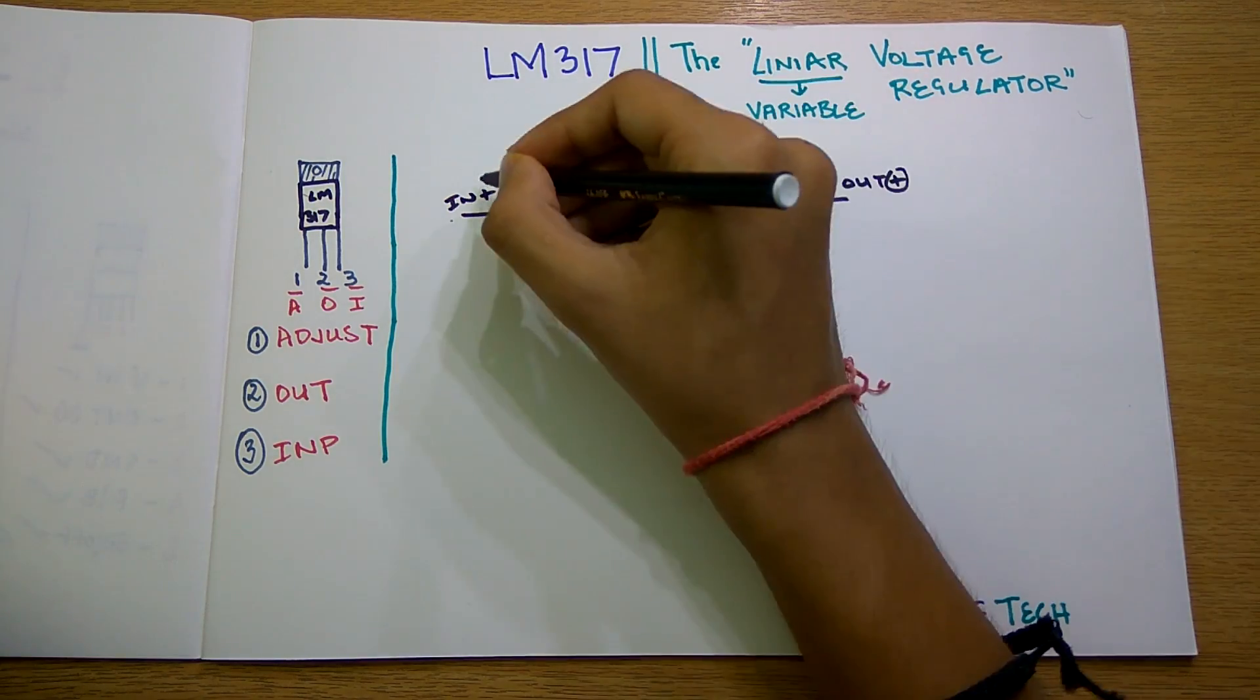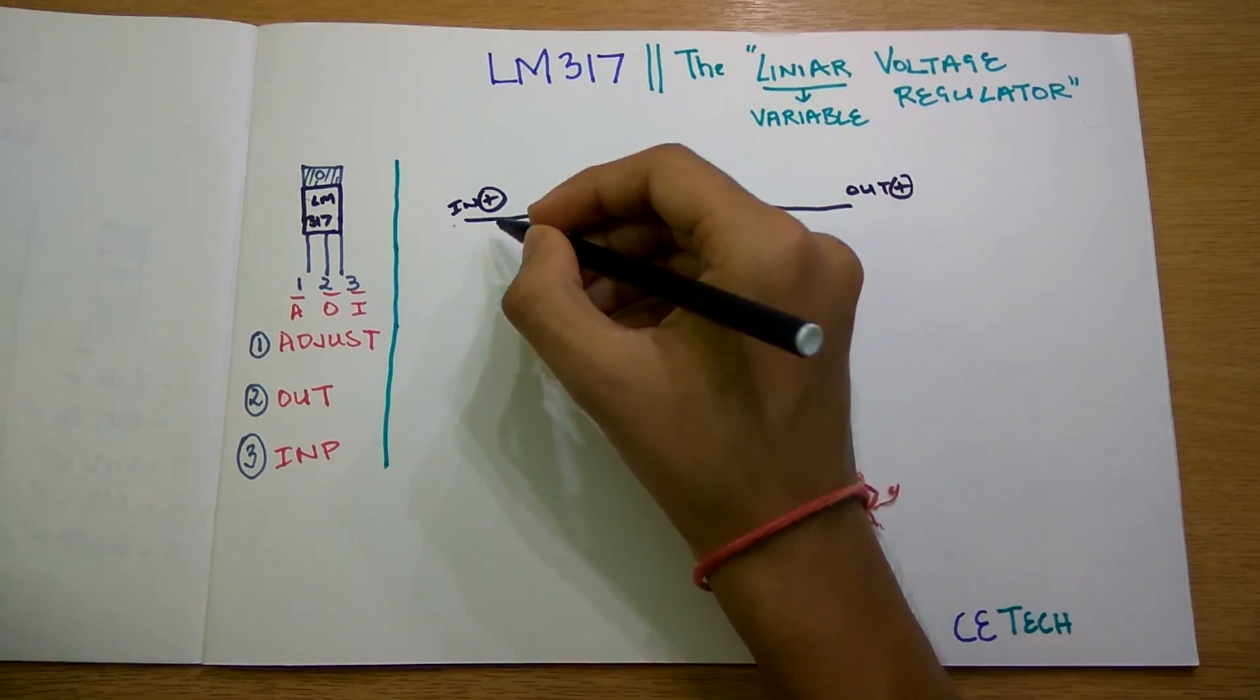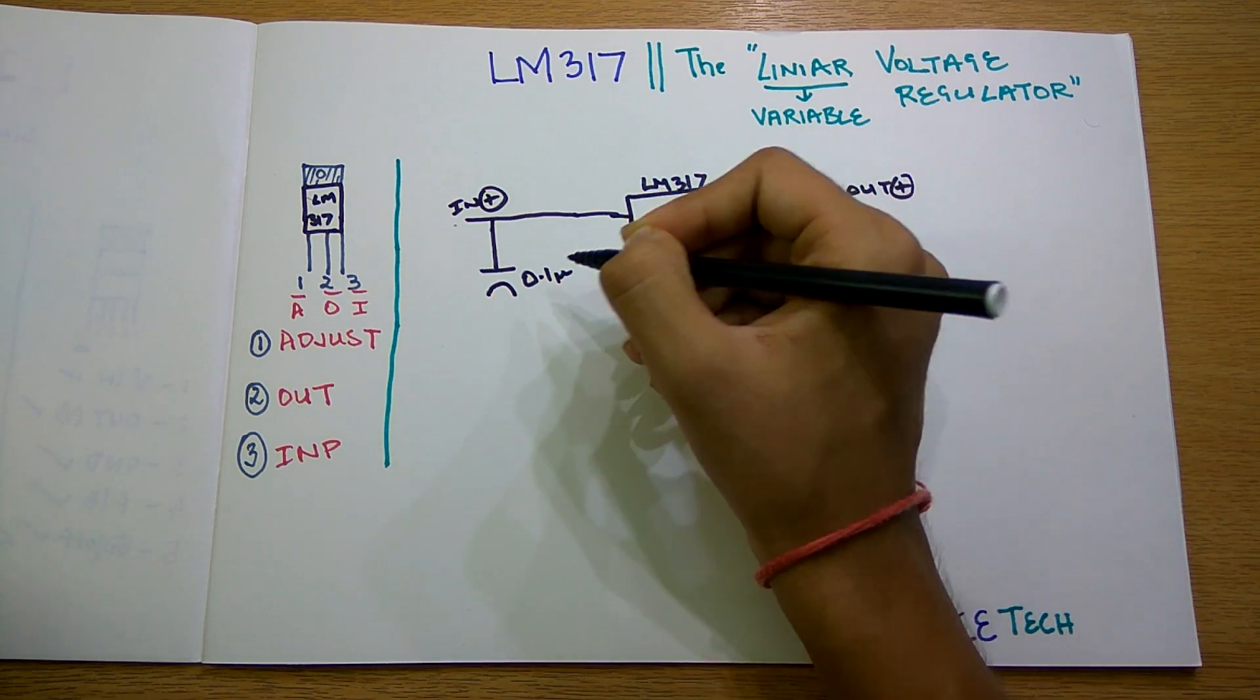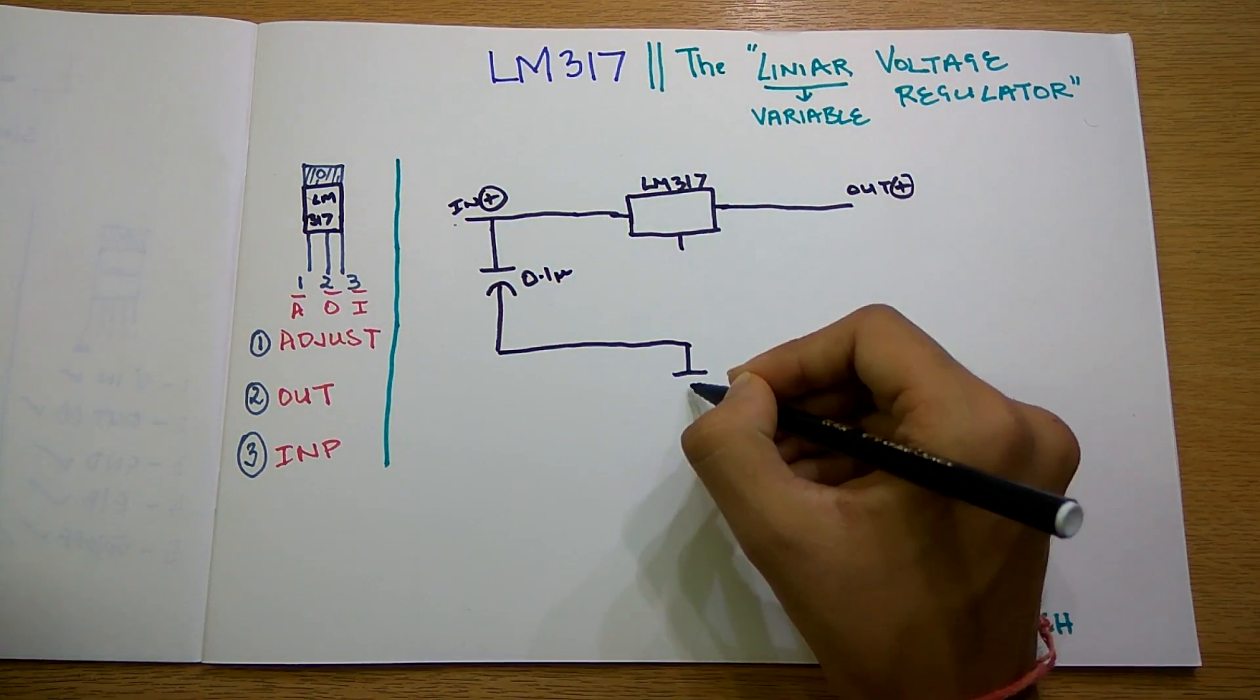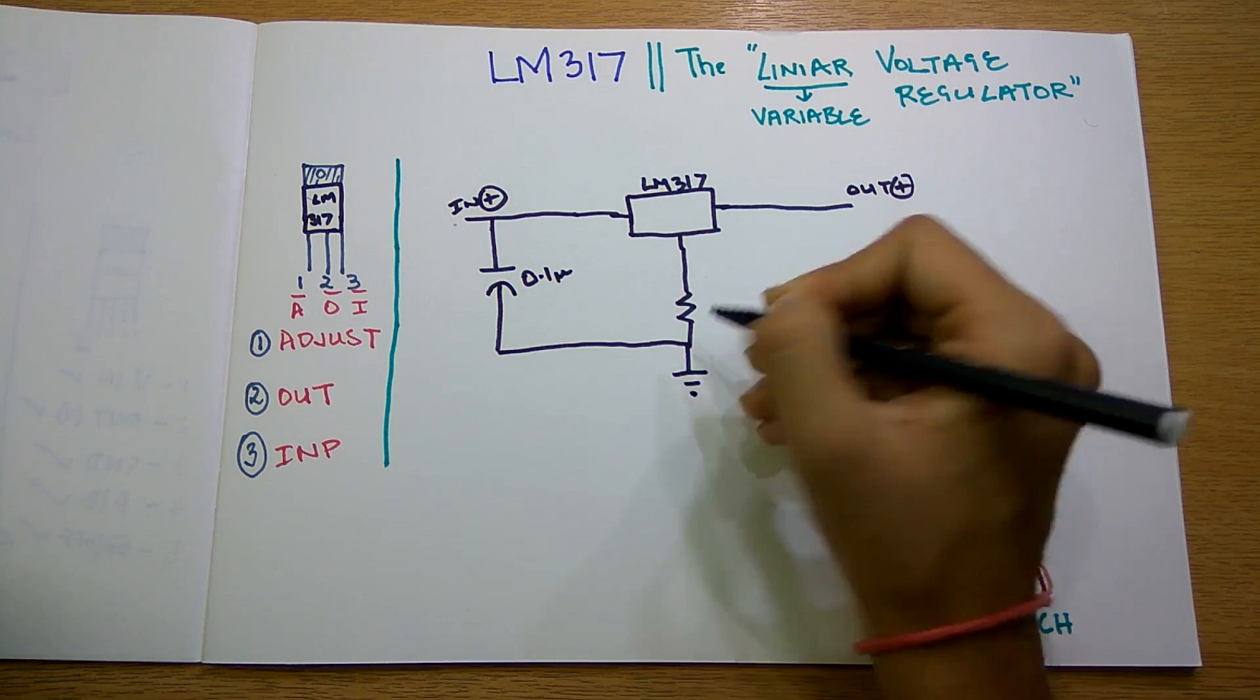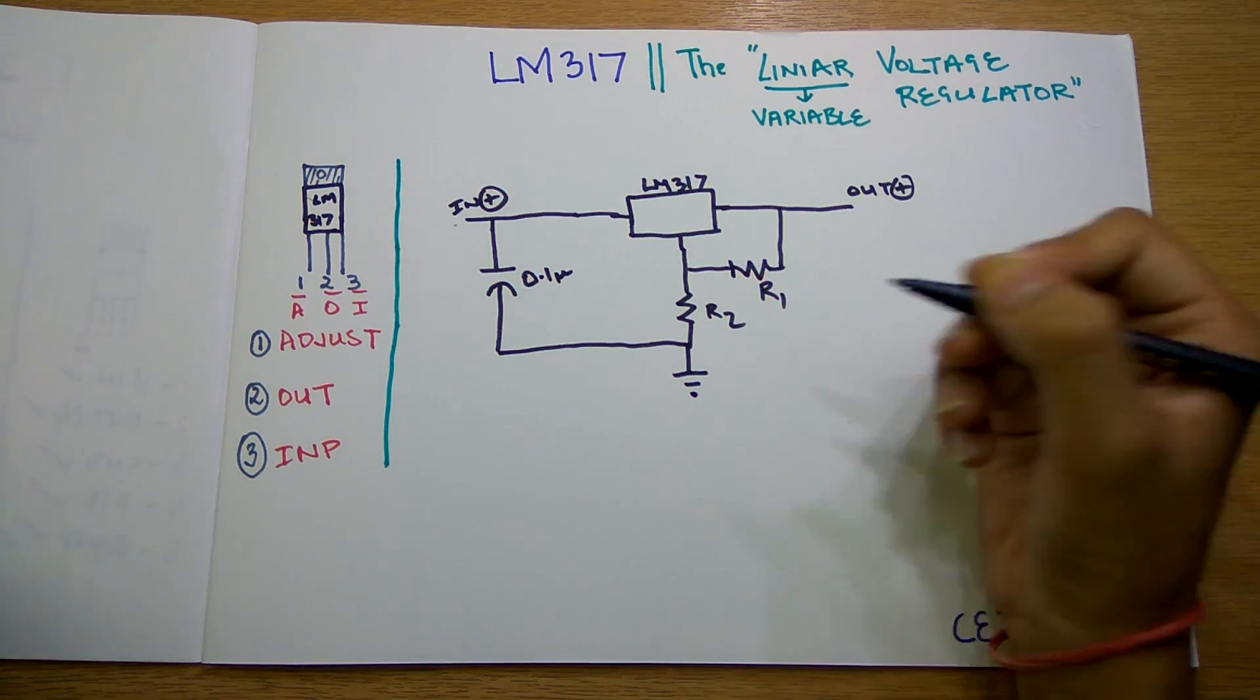We need in this circuit a couple of resistors and a couple of capacitors. Firstly, a capacitor will be placed here which can be 0.1 microfarad or greater. This will be connected right down here to the ground. We will have a connection here as R2 and here we will have a resistor as R1.